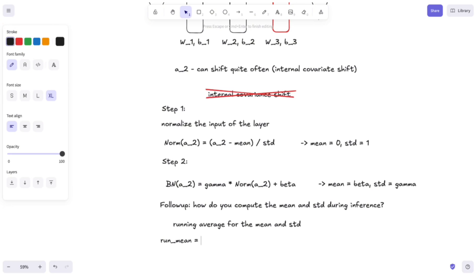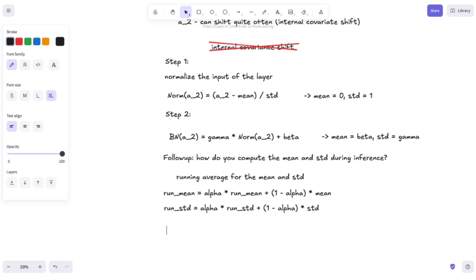So, for instance, our running mean would be equal to alpha, which is our momentum parameter, multiplied by the running mean, plus 1 minus alpha, multiplied by the mean of the current batch. And similarly, the running standard deviation would be equal to alpha multiplied by the running standard deviation plus 1 minus alpha, multiplied by the standard deviation. And then we normalize the sample using these two values.